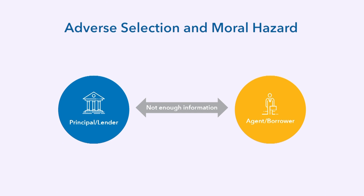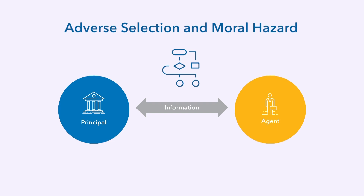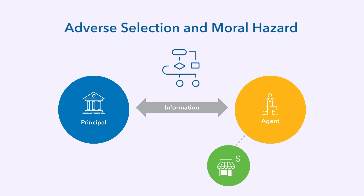Adverse selection and moral hazard are both concepts driven by informational differences. By using algorithms and other pieces of electronic information found through fintech methods, a lot of basic information can be seen more easily by a potential lender — whether a bank, a non-bank financial institution, a corporation, or just another person — to better assess whether the borrower is likely to use the money for something useful, such as a bona fide investment, or something frivolous, like a vacation or gambling.